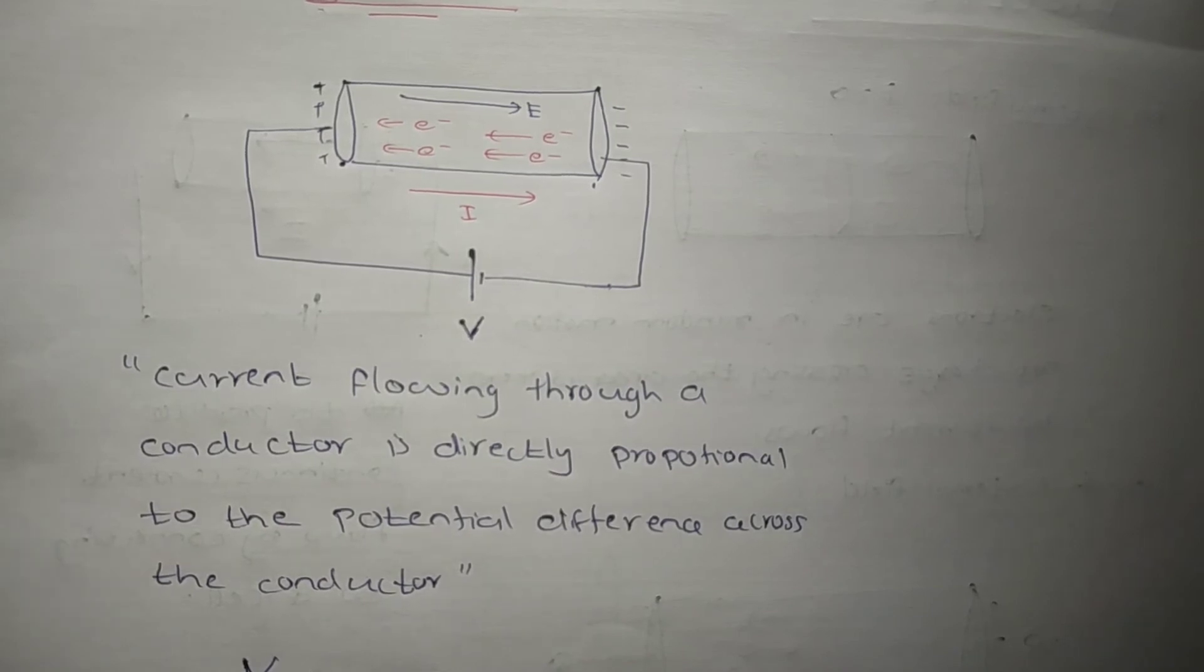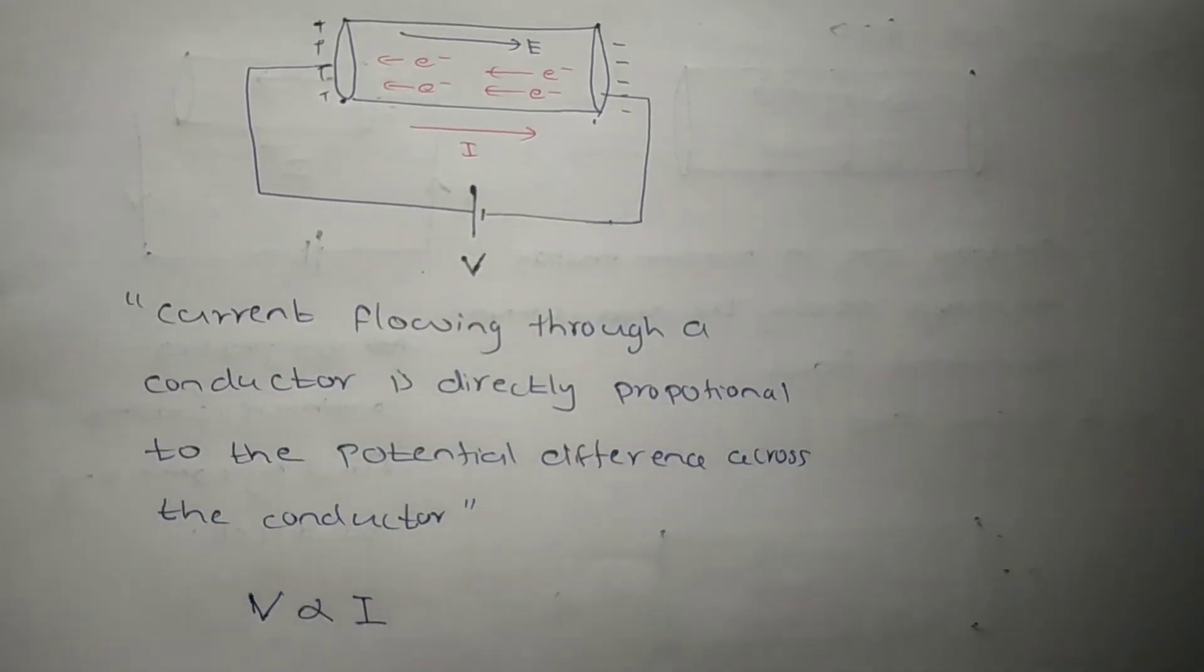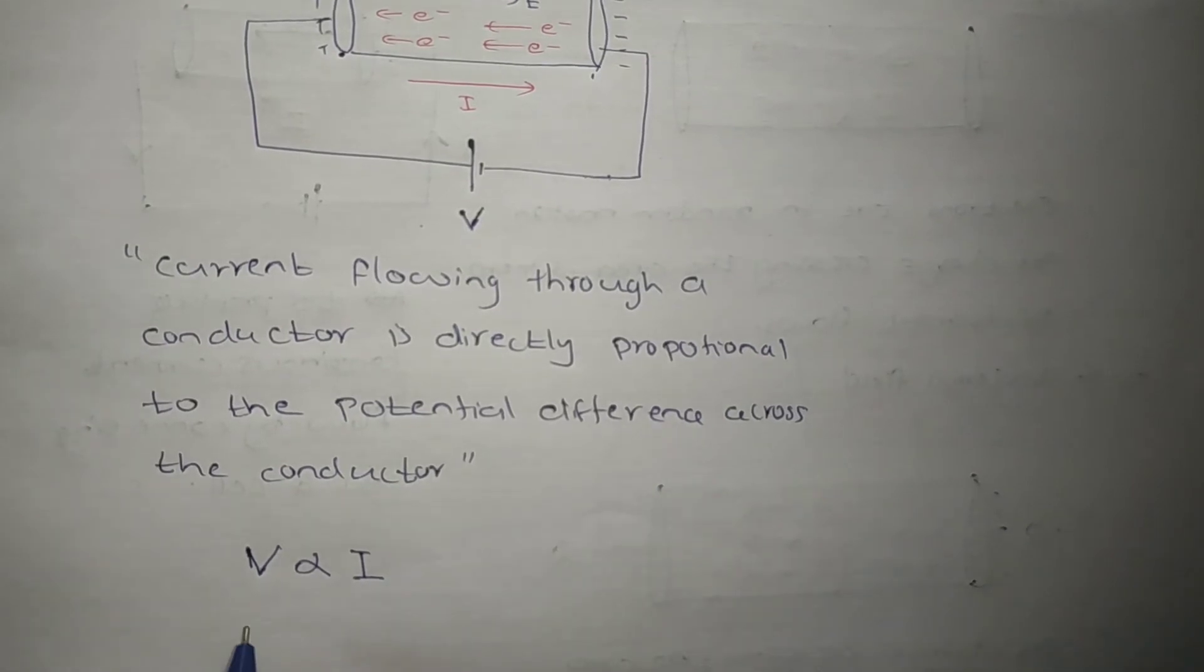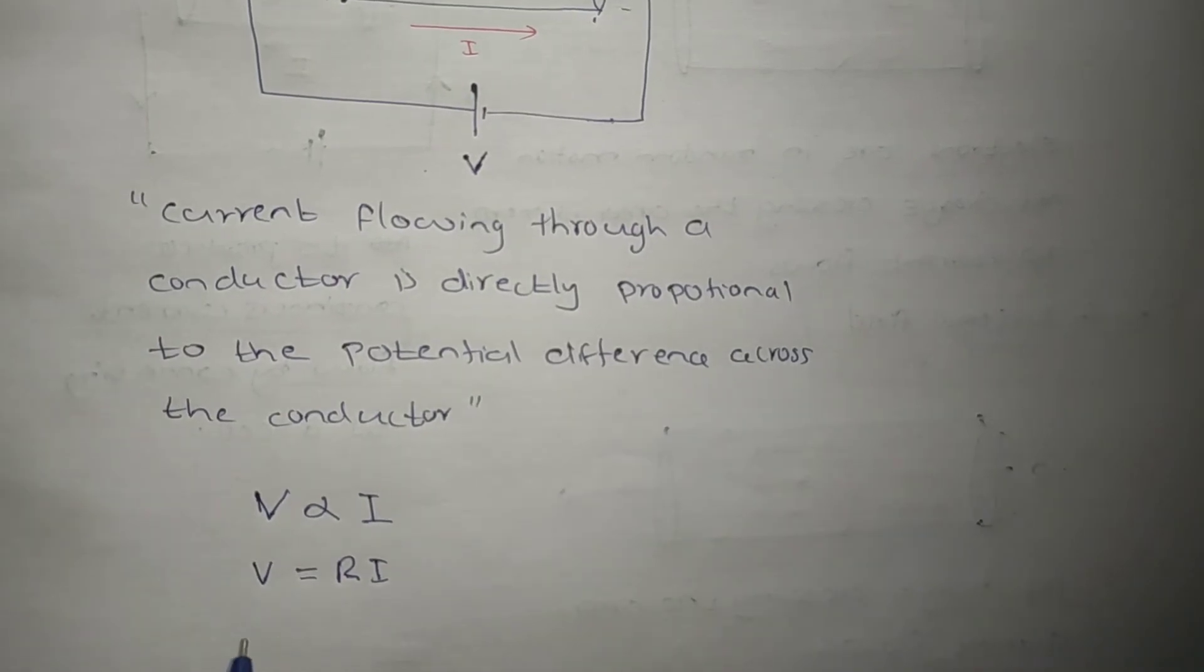The potential difference across this conductor is V. That potential difference is directly proportional to current I flowing through the conductor. Then V can be equated by inserting a constant, that constant is R. That R is called the resistance of the conductor.